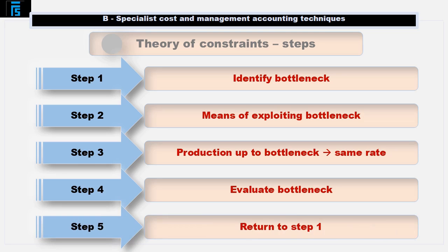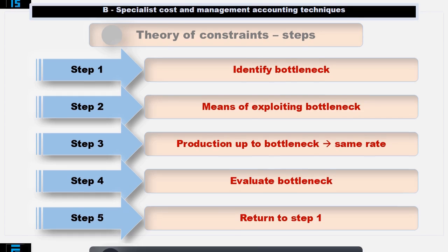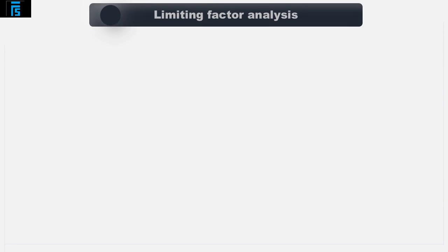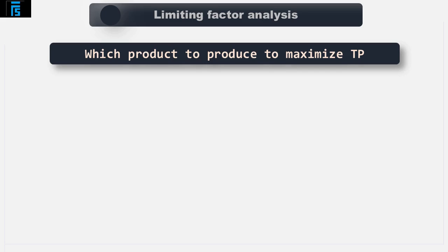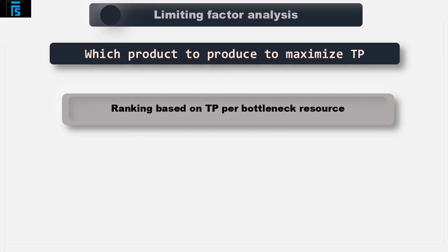Step 5 is to return to Step 1. Eventually, by removing one bottleneck, another is likely to appear, so at this stage we would need to go back to Step 1 and repeat these five steps. The next step is to determine which product or products should be produced to maximise throughput. The calculations are performed in much the same way as for regular limiting factor analysis, but rather than ranking products based on contribution per limiting factor, we now rank them based on throughput per bottleneck resource.